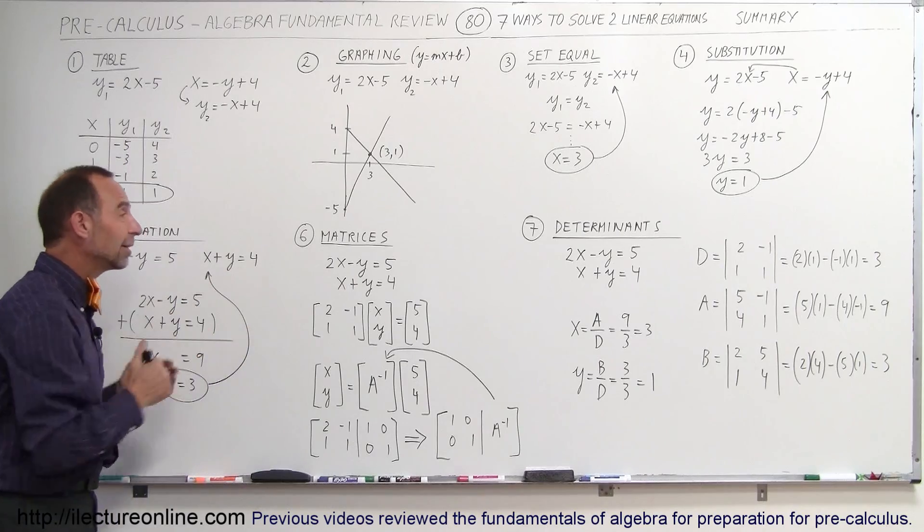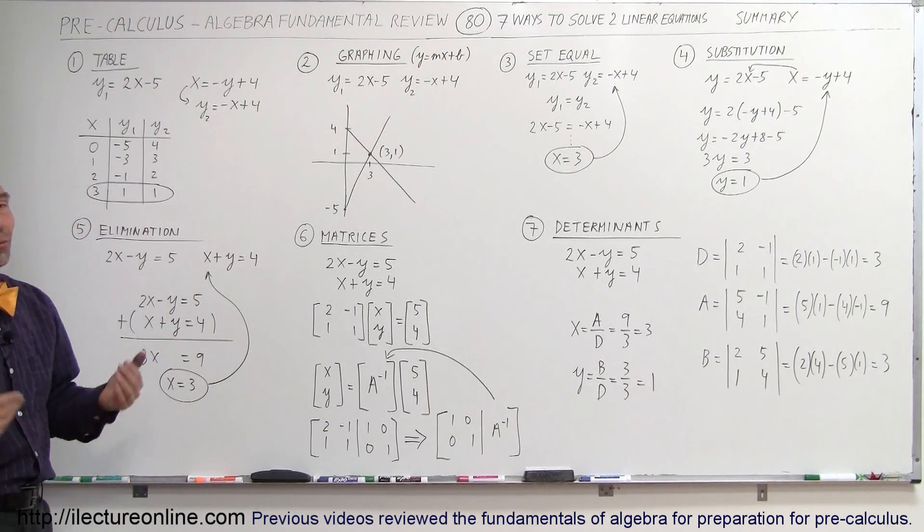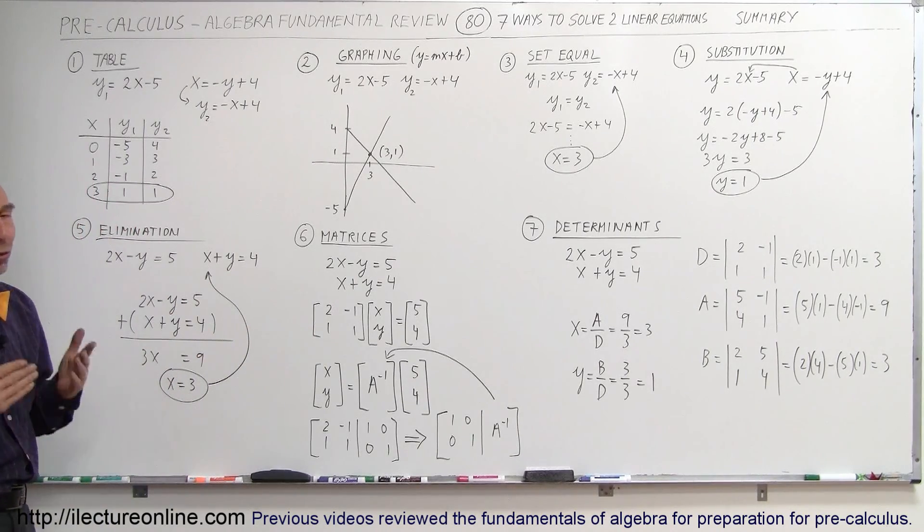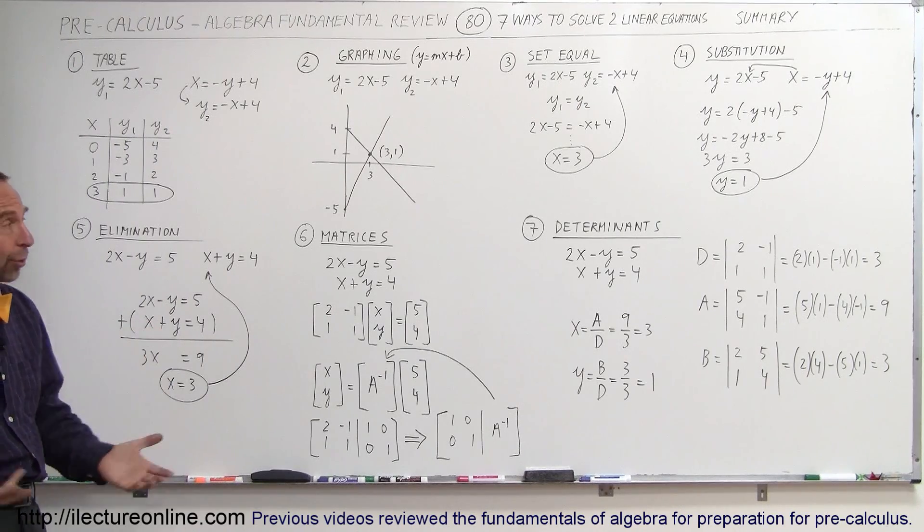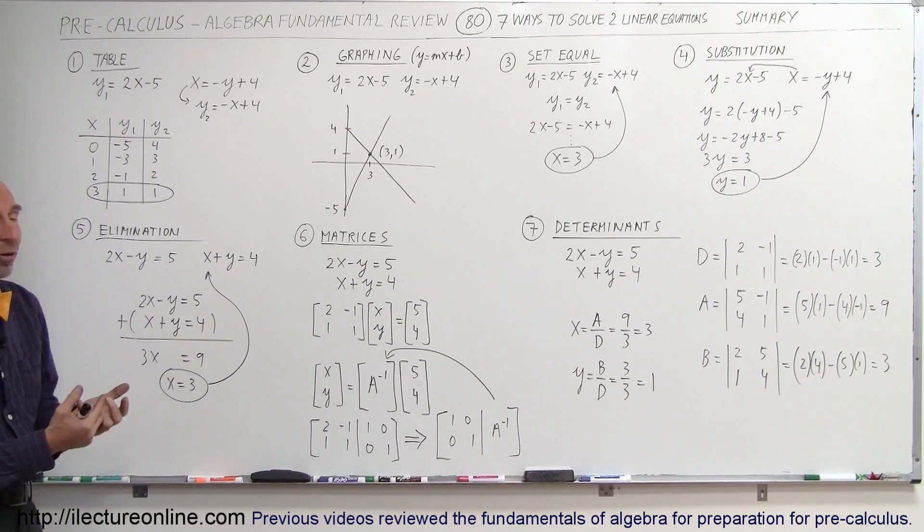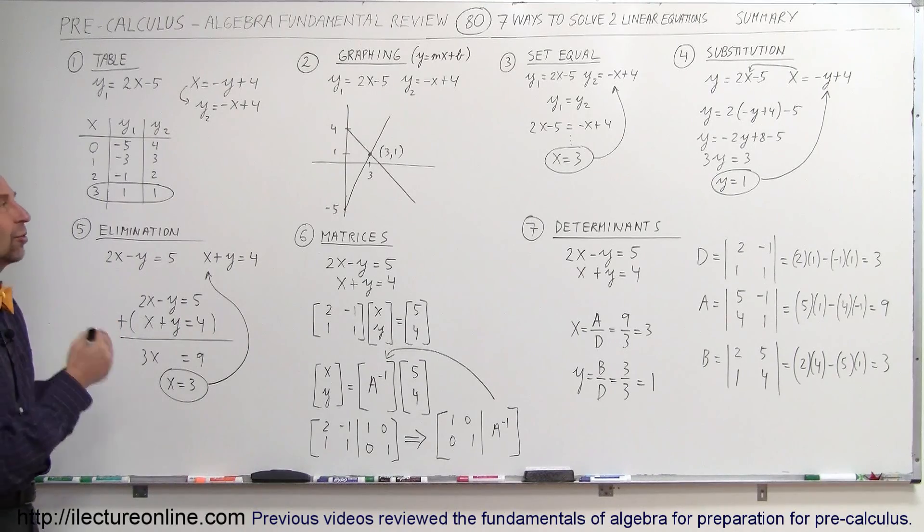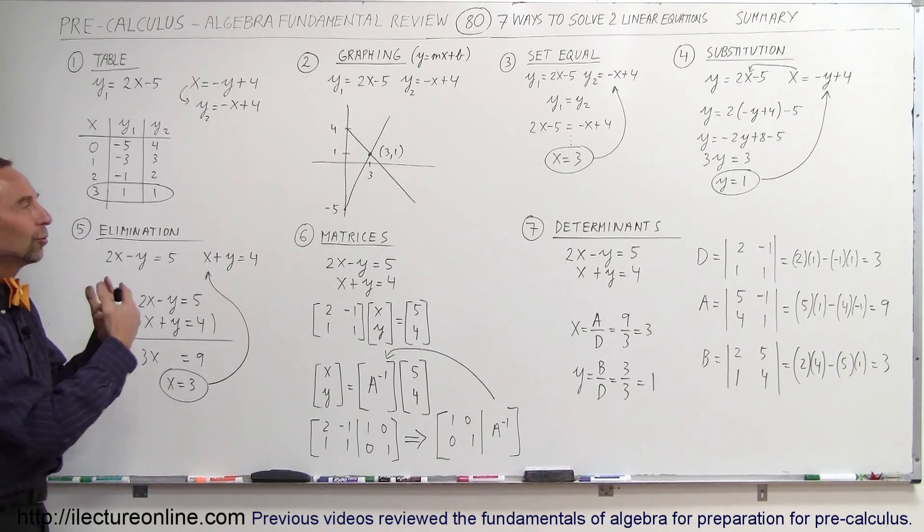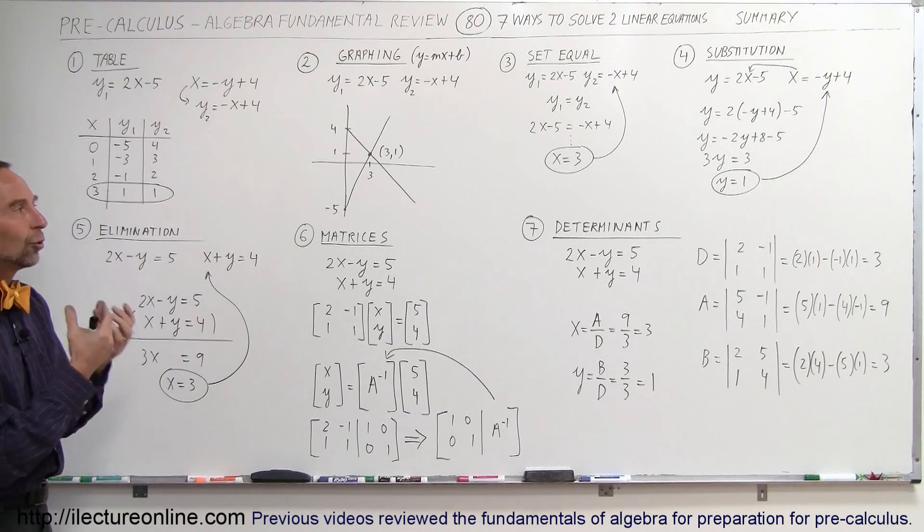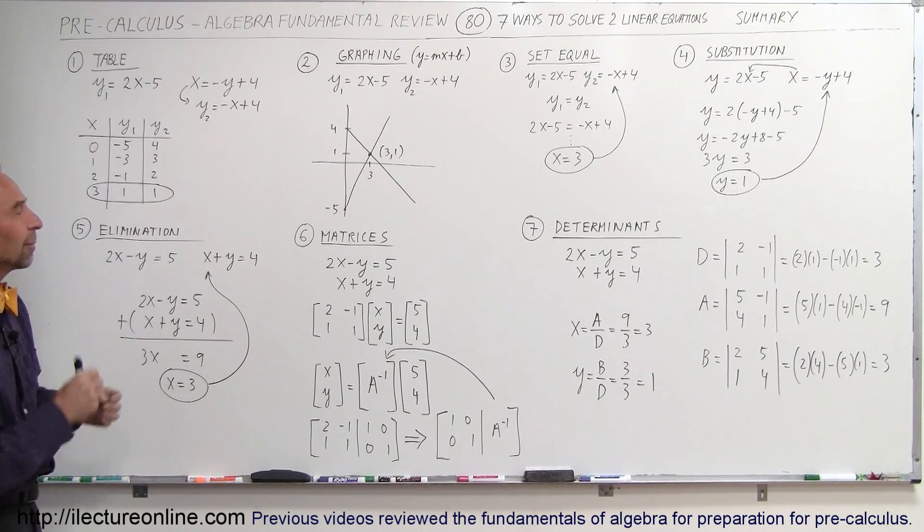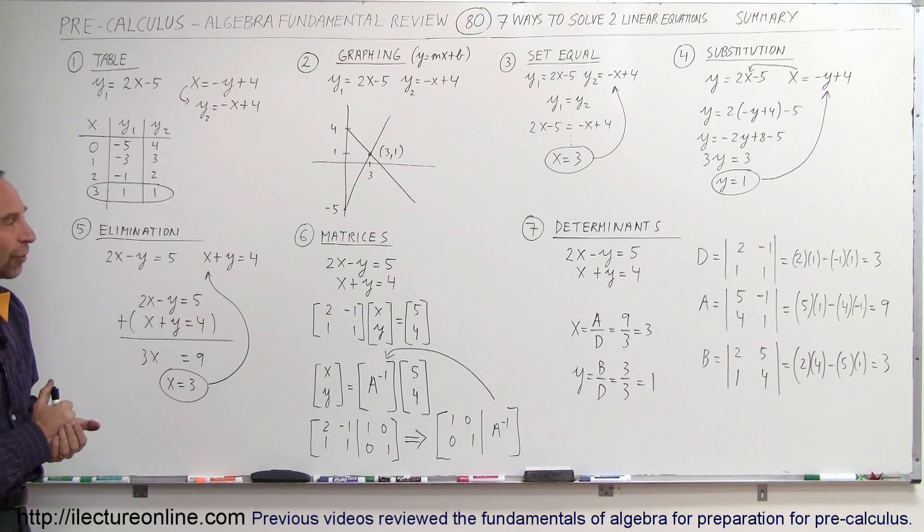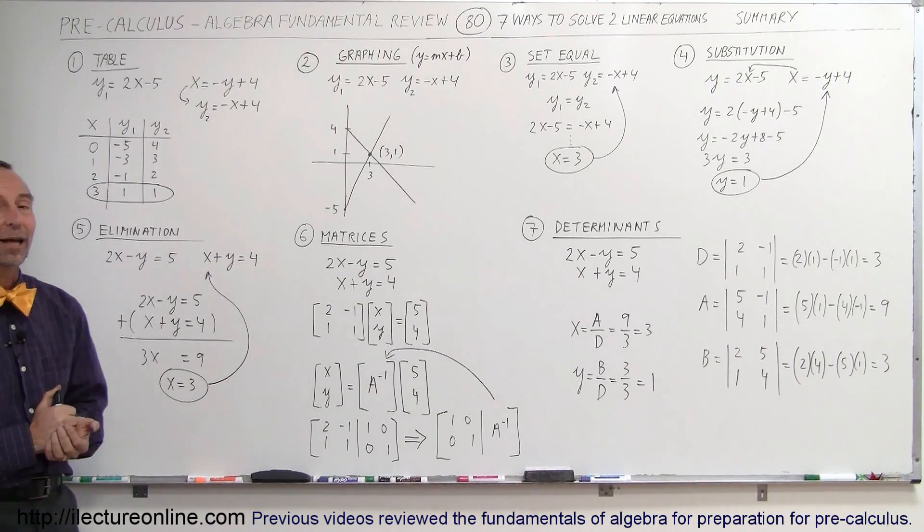So the seven methods, all right there in front of you together, gives you a really nice overview of how to solve two linear equations in very important different ways. Each one of them is unique to a specific situation. They lend themselves to using the equations the way they represent it, and it makes for a really nice way to find the perfect method for you in each situation of how to solve two linear equations. And that's how we do that.